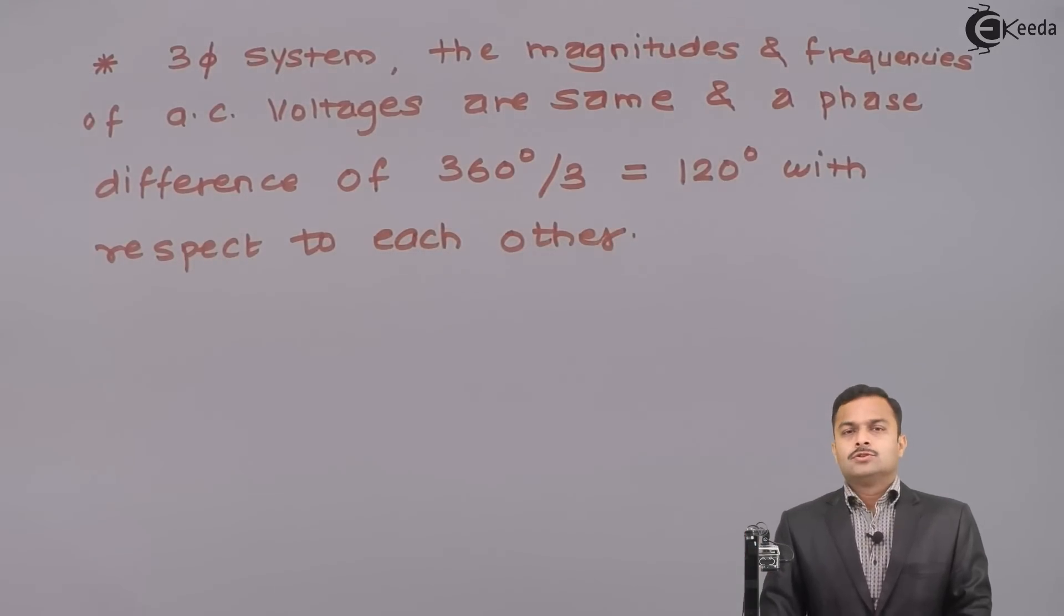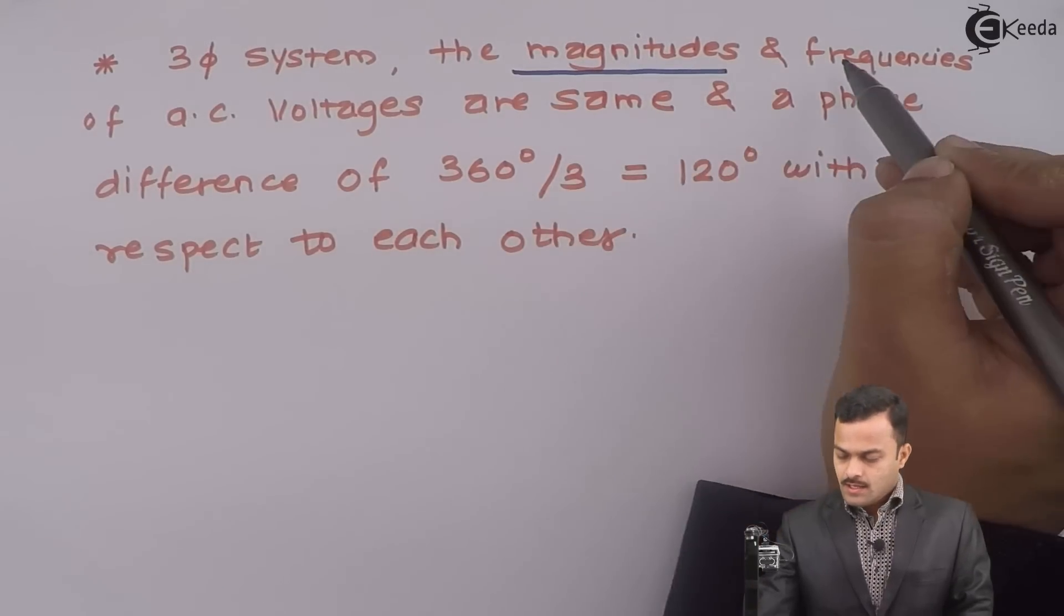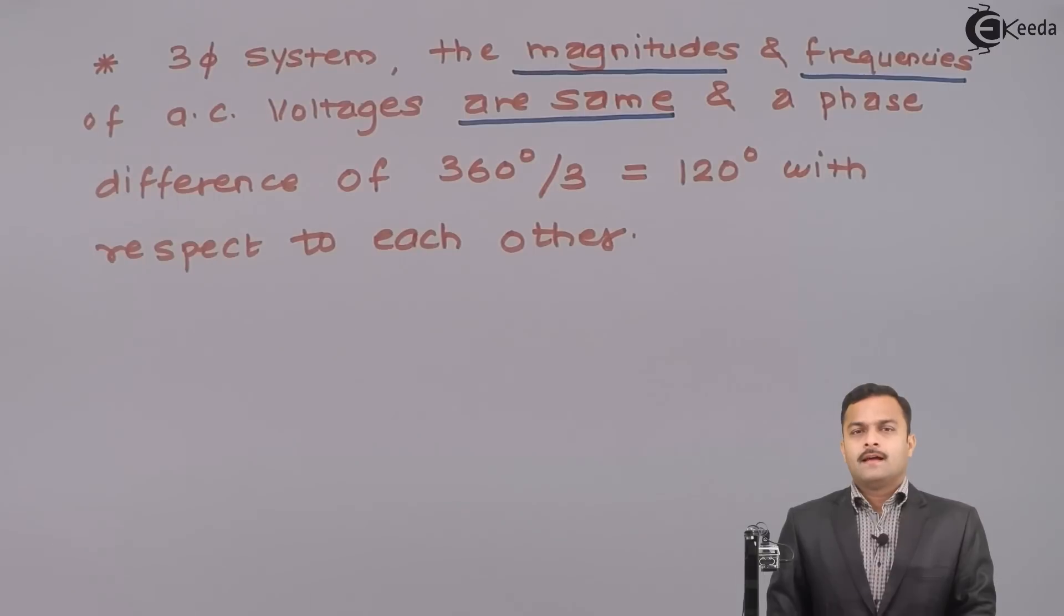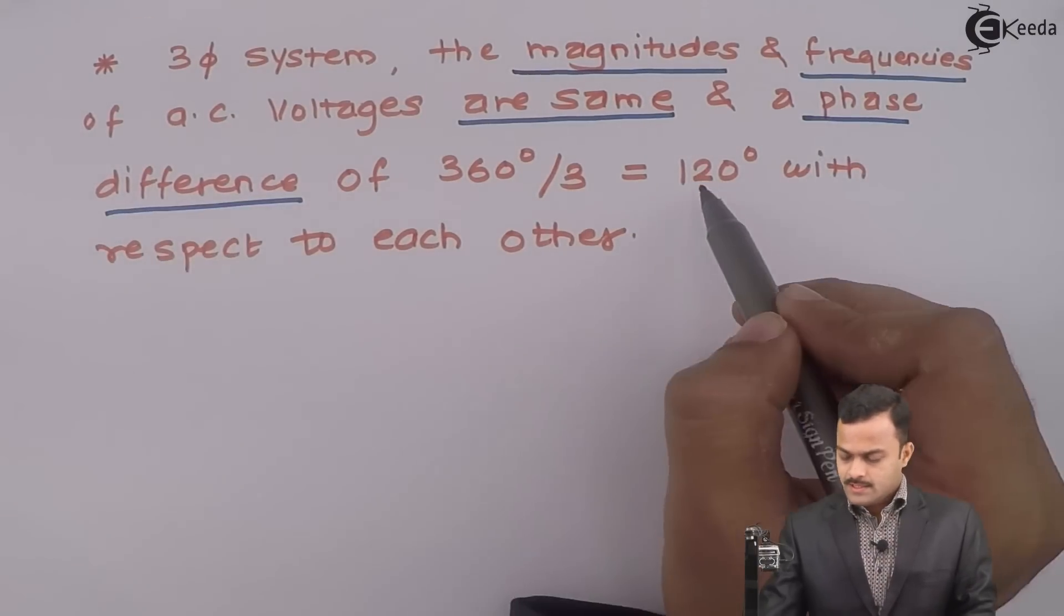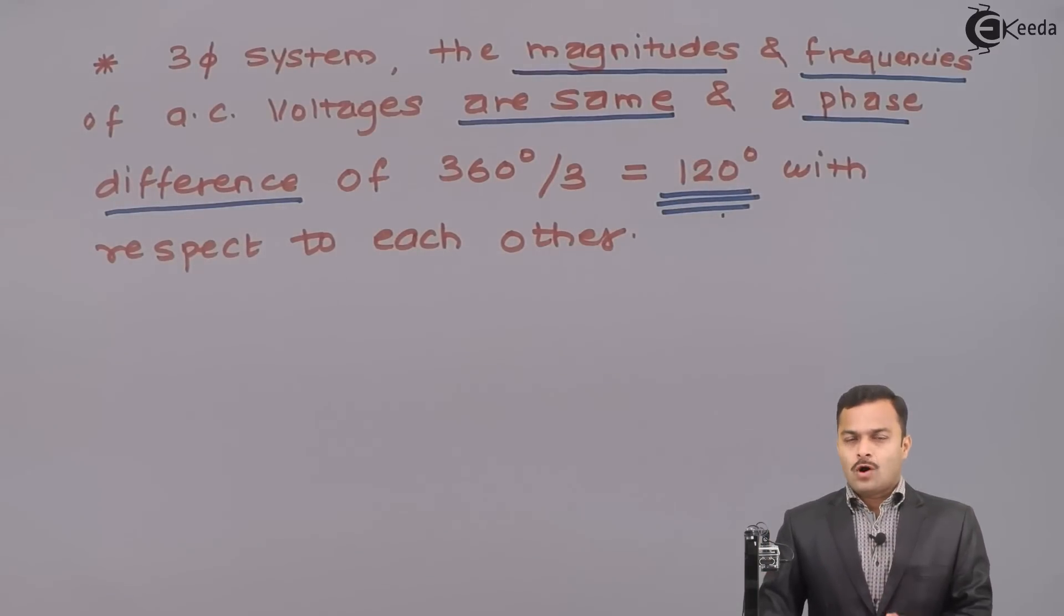I repeat. In a three phase system we have three voltages whose magnitudes and frequencies are same and there will be a phase difference between all of them and that phase difference is 120 degree. So, that is what a three phase system is all about.